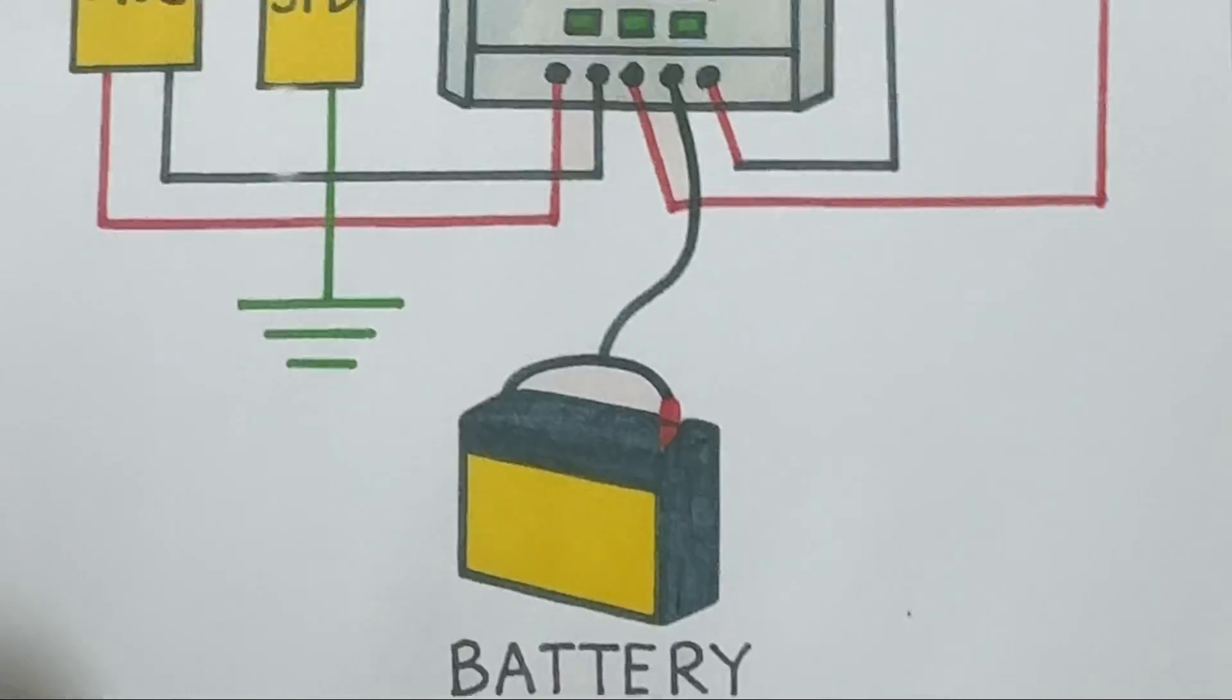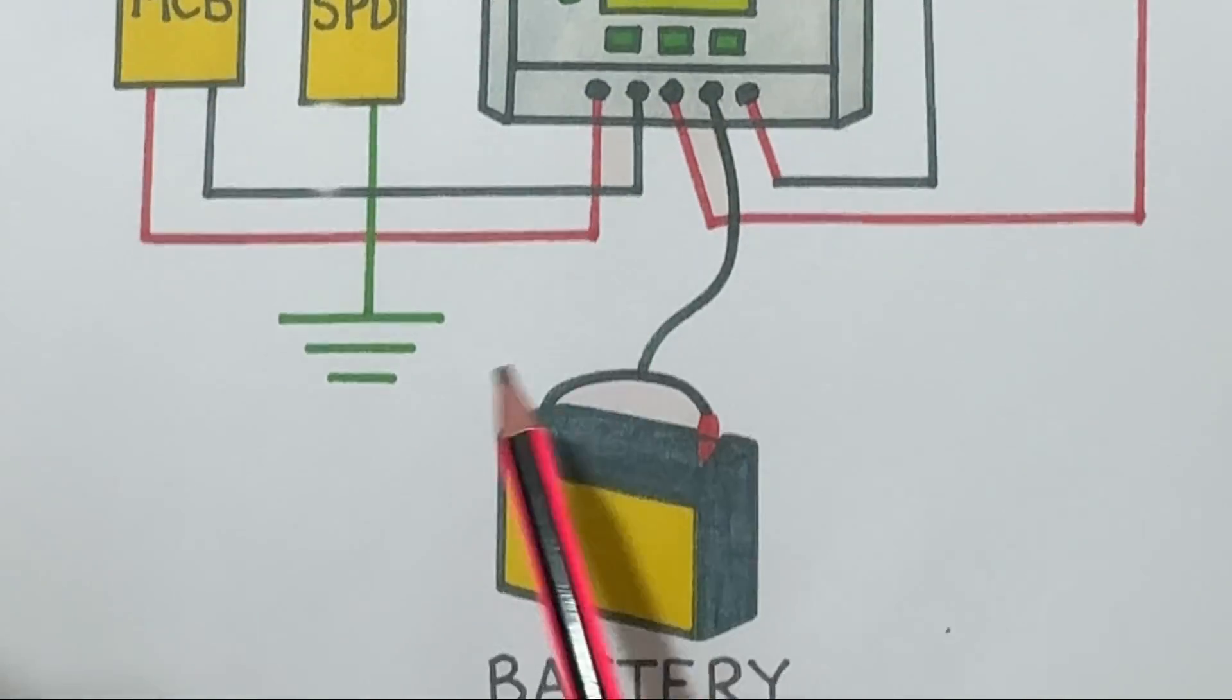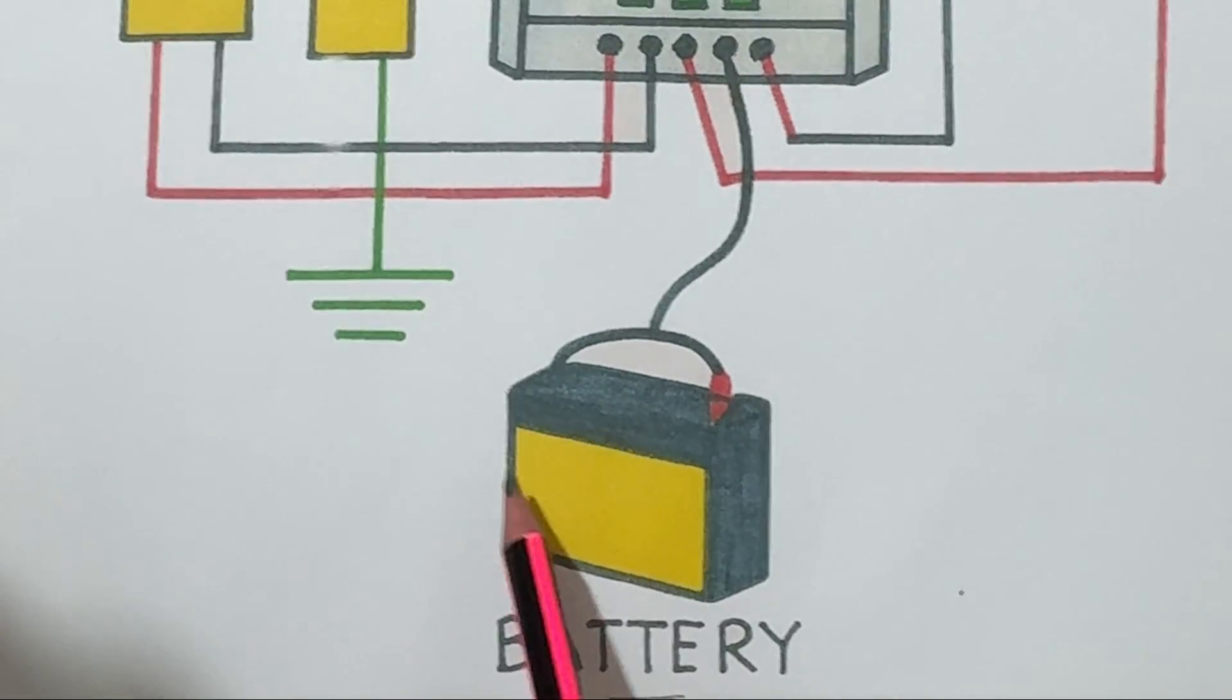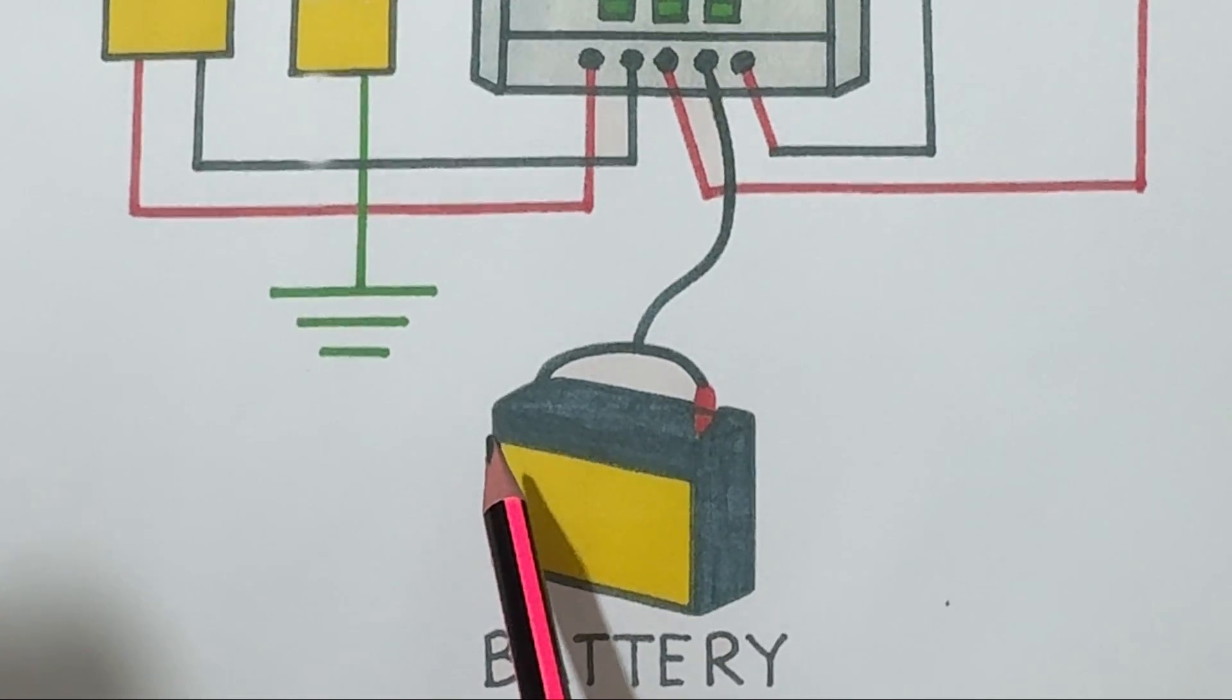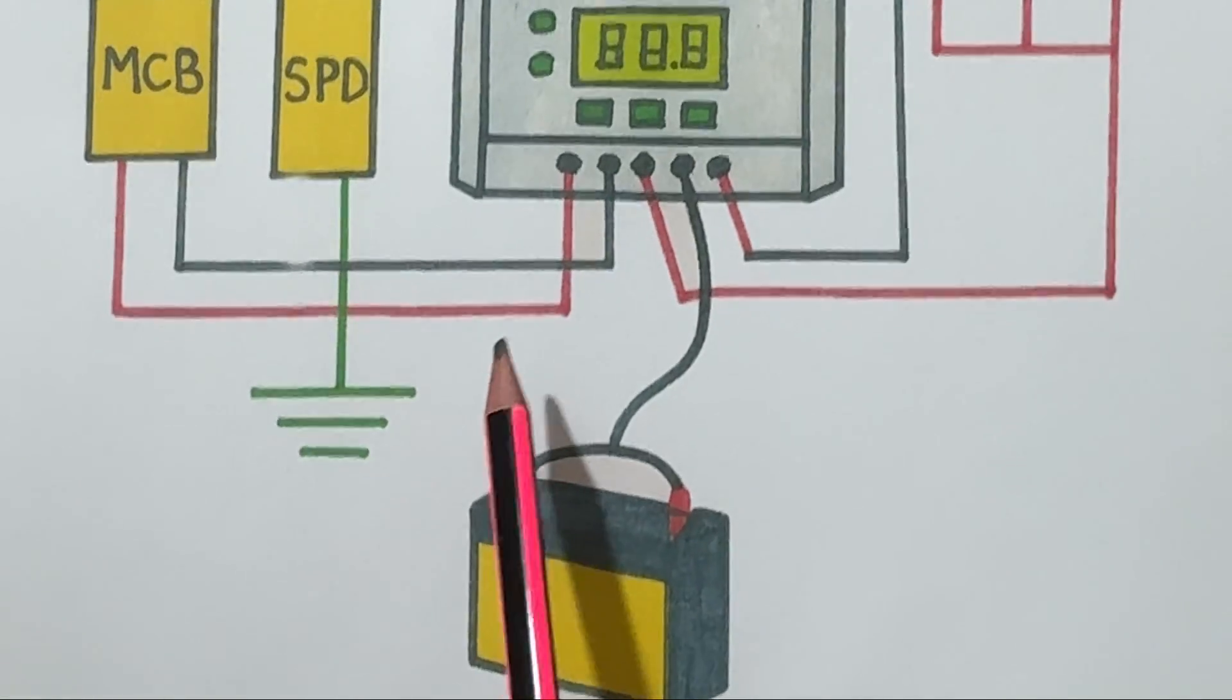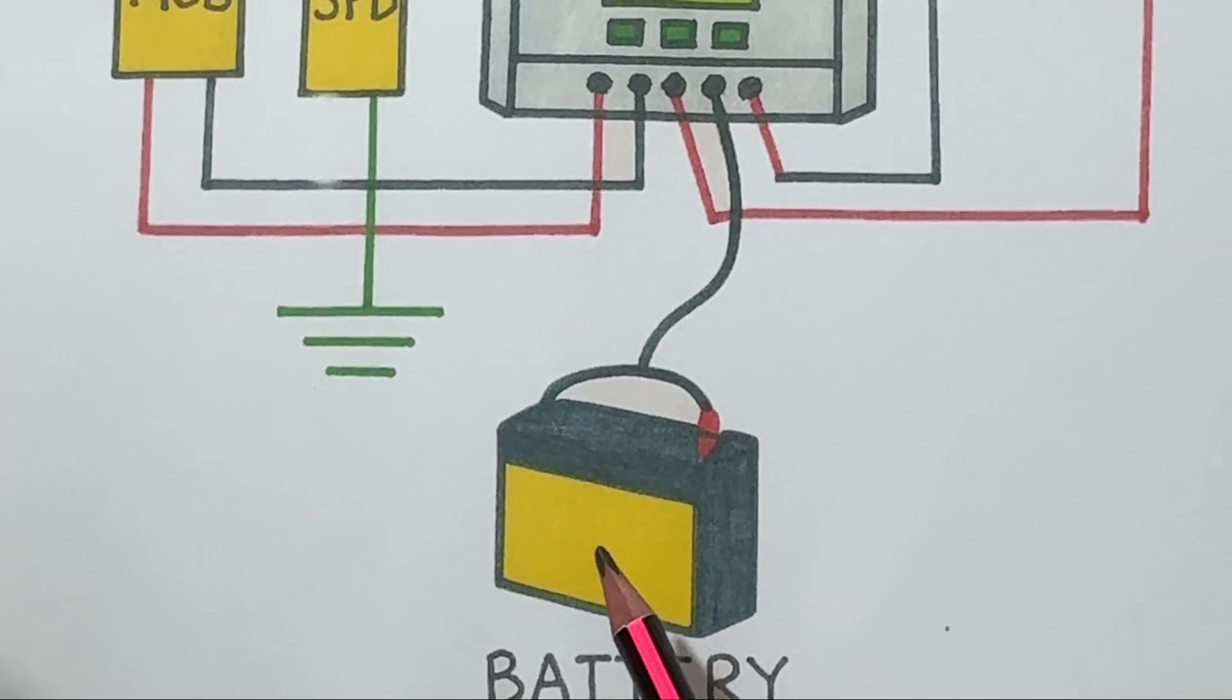The battery is connected directly to the MPPT controller. It stores the extra energy produced during the day so you can use it at night or when the sun isn't shining. The controller manages charging and discharging. It prevents the battery from overcharging or deep discharging, both of which could damage it. So the battery acts like your backup energy bank.